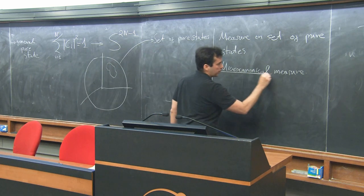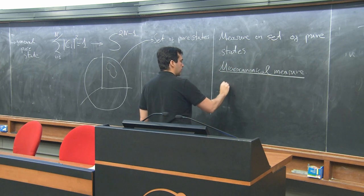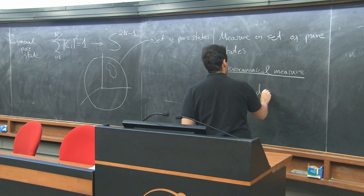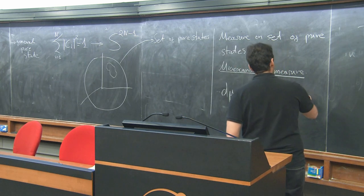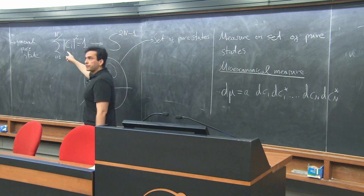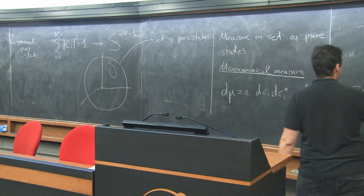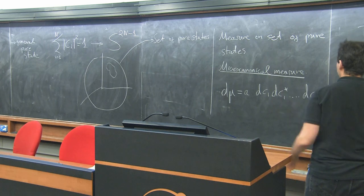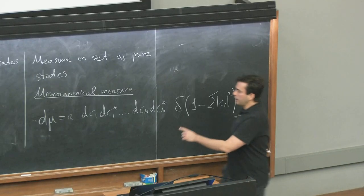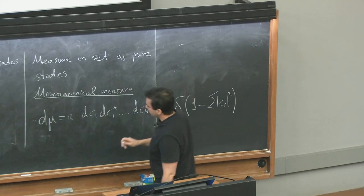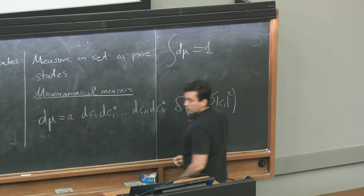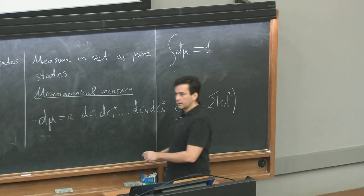In equations, we define dμ = A · dc₁ dc₁* ··· dc_N dc_N* · δ(Σ|c_i|² − 1), where the delta function restricts the measure to the unit sphere. The constant A is fixed by requiring ∫dμ = 1.